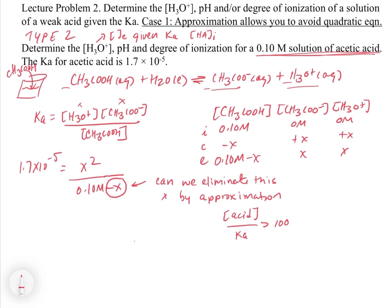Let's check the approximation: we take our 0.10 molar divided by 1.7 times 10 to the minus 5, and this is much, much greater than 100 — it's around 10,000. That tells us this acid breaks up so little that the 0.10 molar is so much bigger than X that X is inconsequential. So we can simplify and get rid of the X in the denominator.